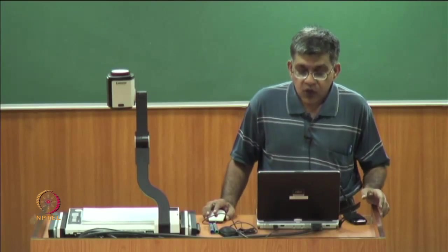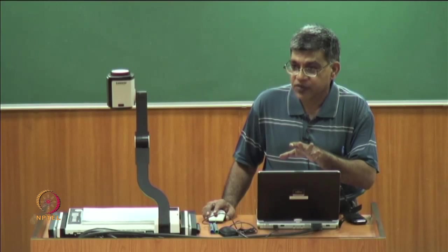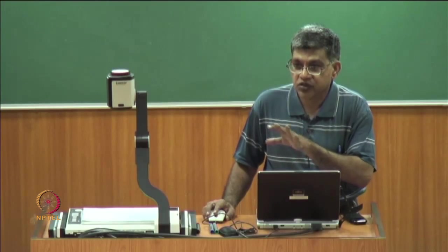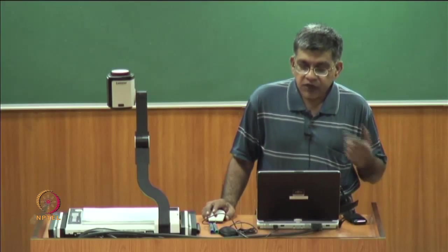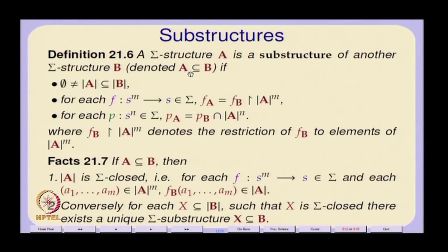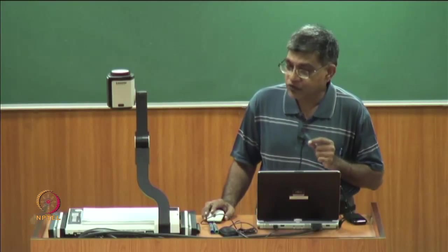A typical example is the even numbers and the natural numbers. The even numbers are a substructure of the naturals with the same signature. For the substructure we use the subset notation, since the domains are related by the subset relation: the carrier set of structure A is a subset of the carrier set of structure B.